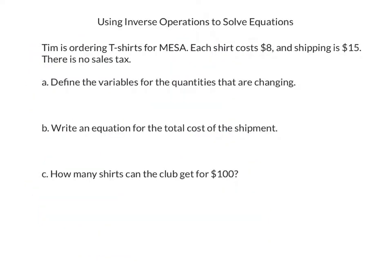Let's try writing and solving two-step equations. So if Tim is ordering t-shirts for Mesa, and each shirt costs $8, and shipping is $15, and there is no sales tax, we need to define the variables for the quantities that are changing. What's changing is how many shirts, and the amount of money you spend based on how many shirts you get. That's pretty straightforward. You can use S for shirts and C for cost. I like to just go with generic X and Y.